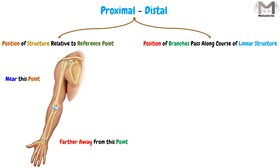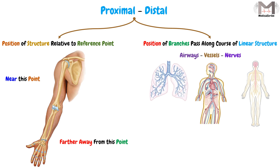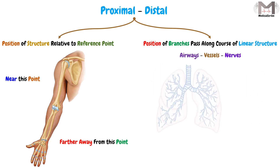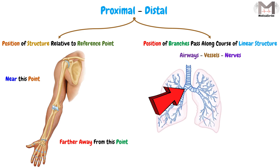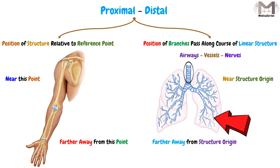So if we have a linear structure like airways, vessels, or nerves, this structure passes through the body in a linear pattern and will branch into many branches to perform their functions. Proximal and distal will be used to identify the location of a branch in relation to the structure's origin — whether it is nearer or farther away from that reference point. We will understand this better with the upcoming examples.